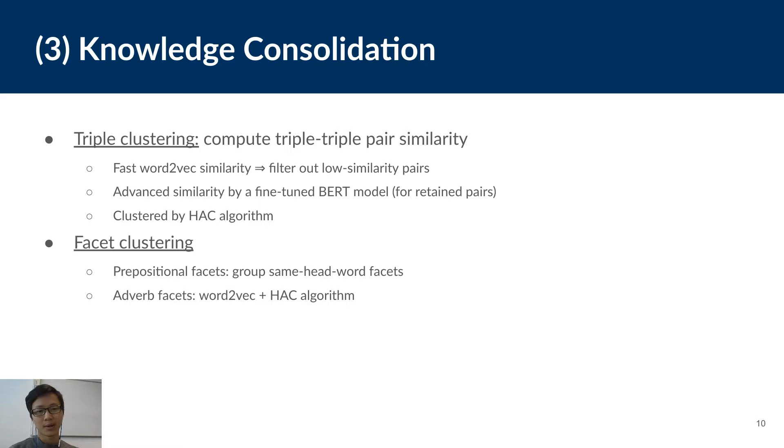And for facet clustering, we go with a simple method. For prepositional facets, we simply group facets with the same headword together. For example, we group during evening and in the evening together. For adverb facets, we use the HAC algorithm again with average Word2Vec embeddings.